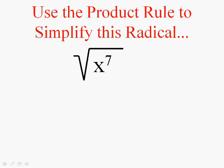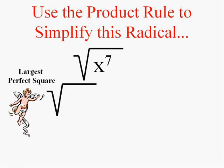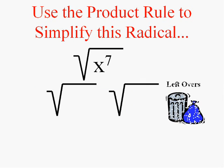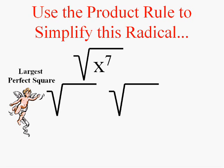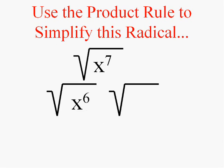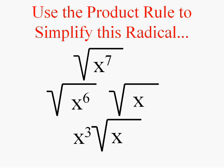What about variables? We're going to do the exact same thing. Factor x to the seventh into the largest perfect square that goes into it times whatever's left over. Any even exponent is a perfect square. The largest even exponent that goes into x to the seventh is x to the sixth, and x to the sixth times x equals x to the seventh. The square root of x to the sixth is x to the third, and the leftover we just write. So this radical simplified is x to the third times the square root of x.